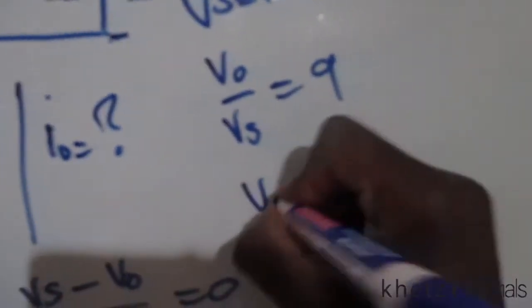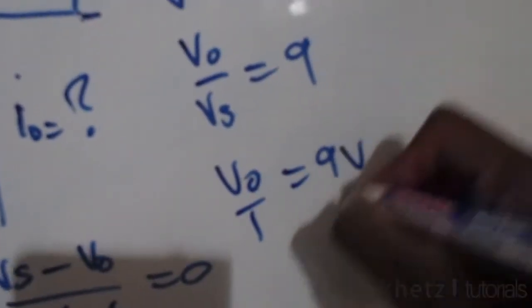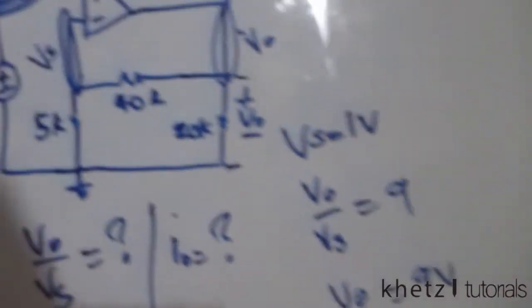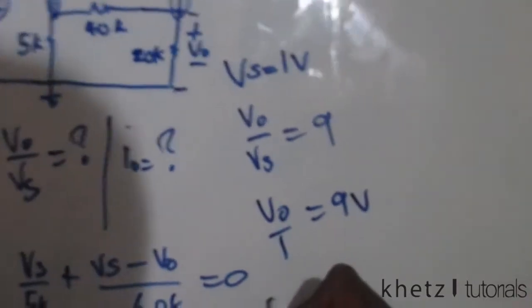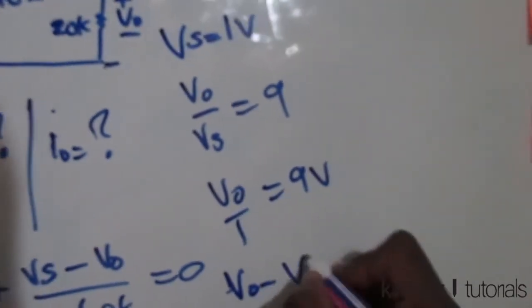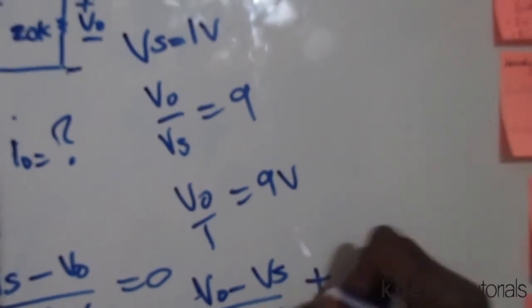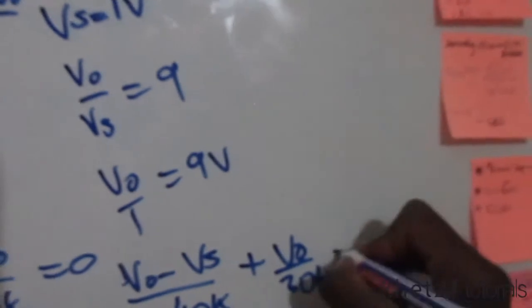This means vo equals 9 volts. So we have the values of vs and vo. We can now do nodal analysis at this vo node. Doing that, we're going to have vo minus vs divided by 40k plus vo divided by 20k minus io, because it's going into the node, equals zero.